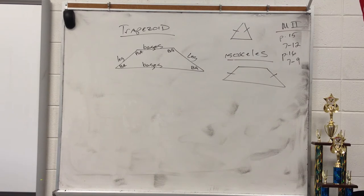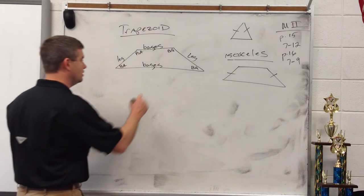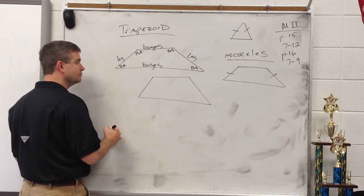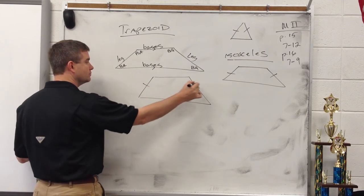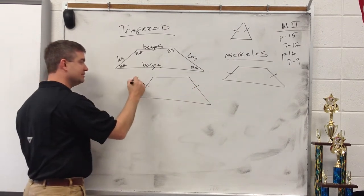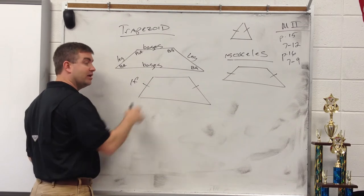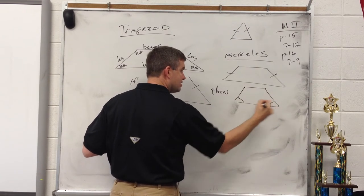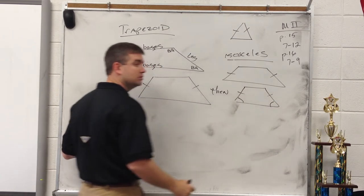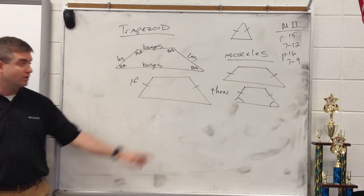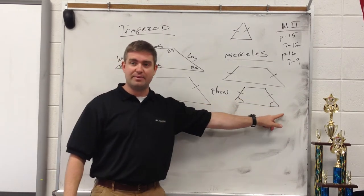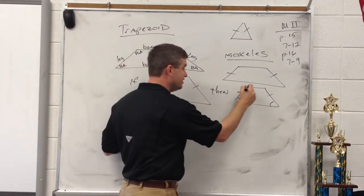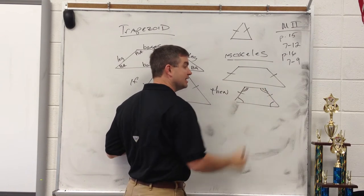Now let's talk about the theorems. If a trapezoid is isosceles, then each pair of base angles is congruent. So if we know the legs are congruent, then we know the angles here and here are congruent. If it's an isosceles trapezoid, then that base angle equals that base angle. And the angles at the top — this angle here is congruent to this angle.